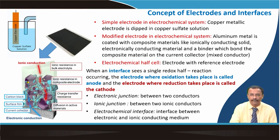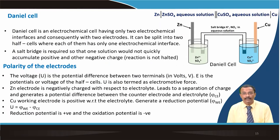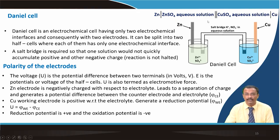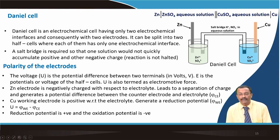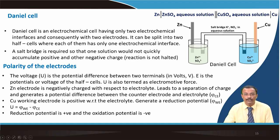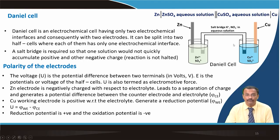Now let us look at the Daniel cell. Zinc is used as one electrode dipped in zinc sulphate aqueous solution, and copper is dipped in copper sulphate aqueous solution. This makes the Daniel cell. There is a salt bridge — basically a potassium nitrate aqueous solution — that connects the two half-cells. This is an electrochemical cell with two electrochemical interfaces and two electrodes, which can be split into two half-cells each having one interface. The salt bridge prevents one solution from accumulating positive charges and the other negative charges, so the reaction is not halted.